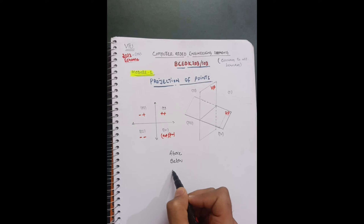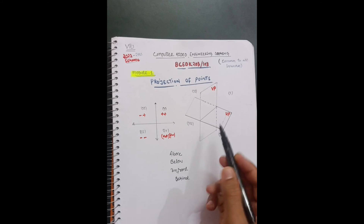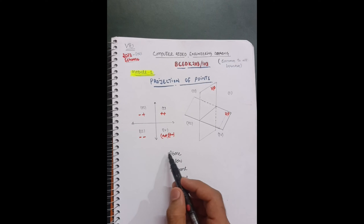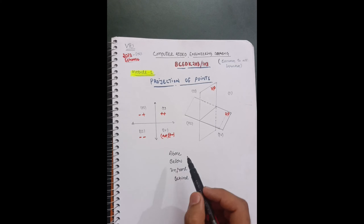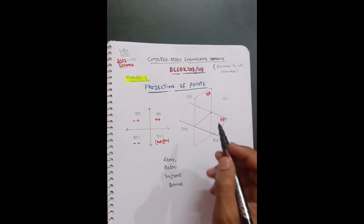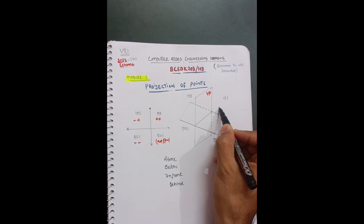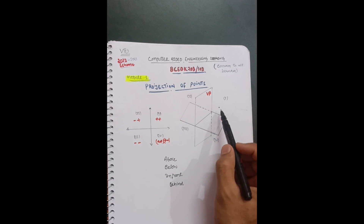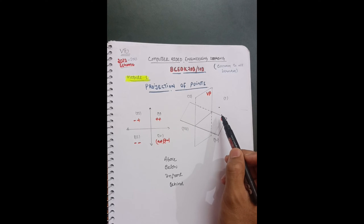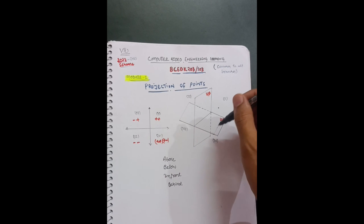Let me tell you some important terminologies: above, below, in front, and behind. These are the key terms you will encounter in every question. For example, if a point is in the first quadrant — that is, in the Horizontal Plane — I can say it is above HP and in front of VP. There will also be specific measurements, like a point 20 mm above HP and 30 mm in front of VP.